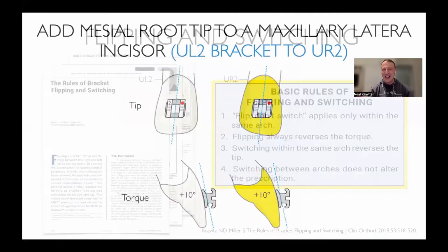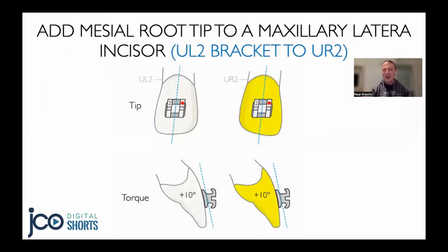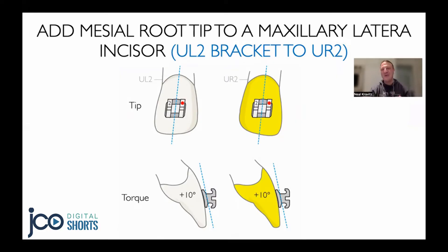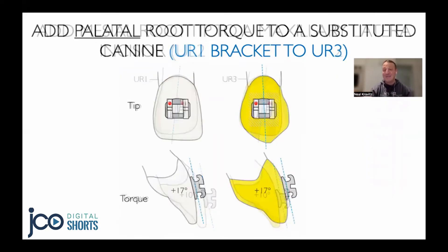A classic example of bracket substitution occurs in the first phase of treatment when we want to switch the right and left lateral incisor brackets. We may want to put a left lateral incisor bracket on a right maxillary lateral incisor to add mesial root tip to avoid the mesially erupting maxillary canine. By switching the brackets, we reverse the tip from distal to mesial but do not affect the torque.